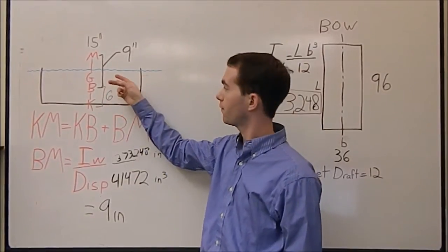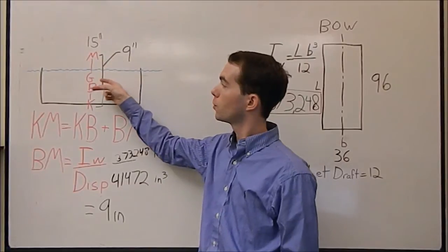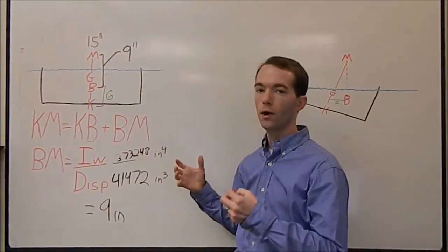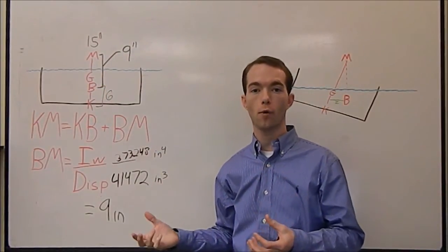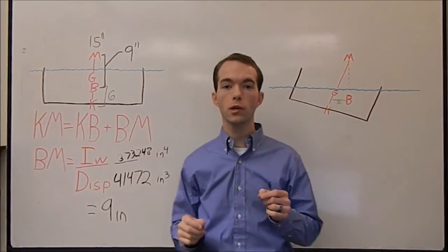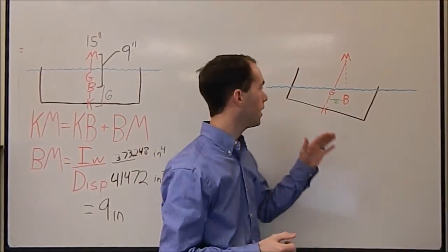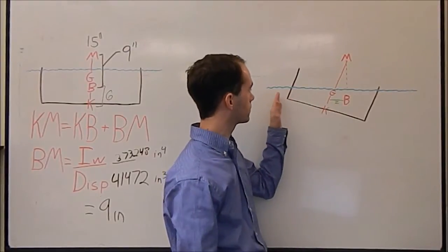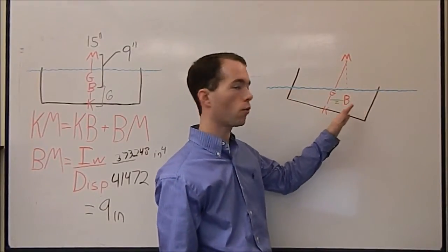The metacentric height is defined as GM, which is something we don't know yet. We want to have a positive riding moment when the boat starts to heel or tip from side to side. Now, this only works for small angles, but it looks like this. I've drawn this slightly exaggerated, of course.